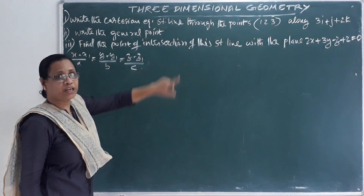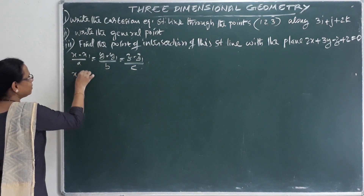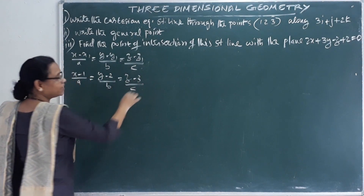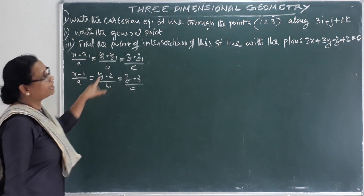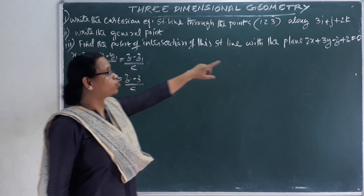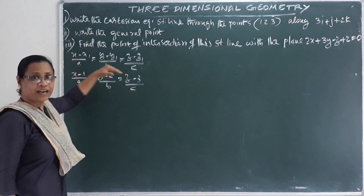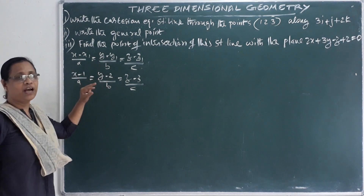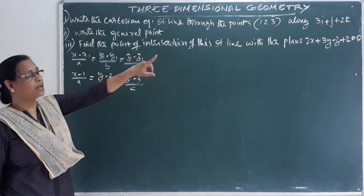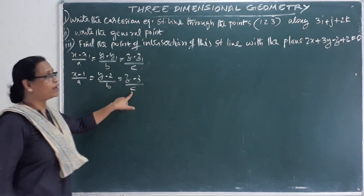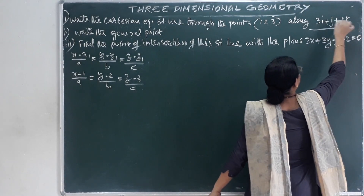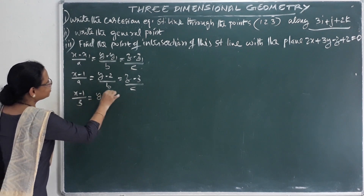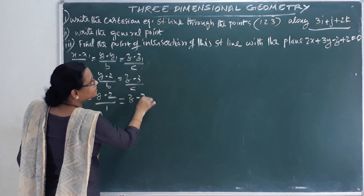The line passes through point (1, 2, 3), so x − 1, y − 2, z − 3. The direction vector is 3i + j + 2k, so the direction ratios a, b, c are the coefficients: 3, 1, 2. Therefore the Cartesian equation is (x − 1)/3 = (y − 2)/1 = (z − 3)/2.